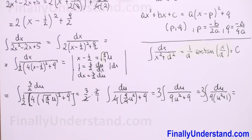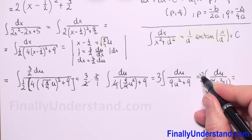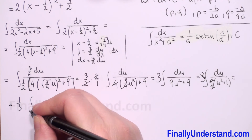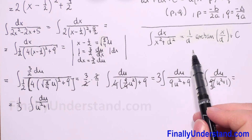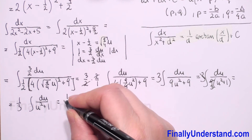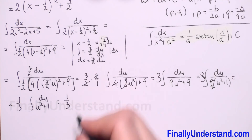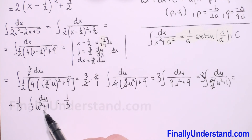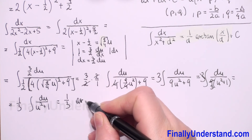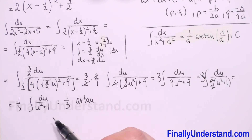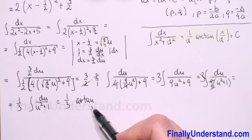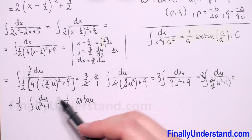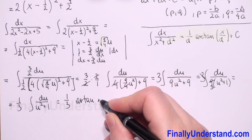We can reduce: 3 and 9 give us 3, so we have 1 over 3 times the integral of du over u squared plus 1. Now we apply the arctangent formula. With d equal to 1, the result is 1 over 3 times arctangent of u.